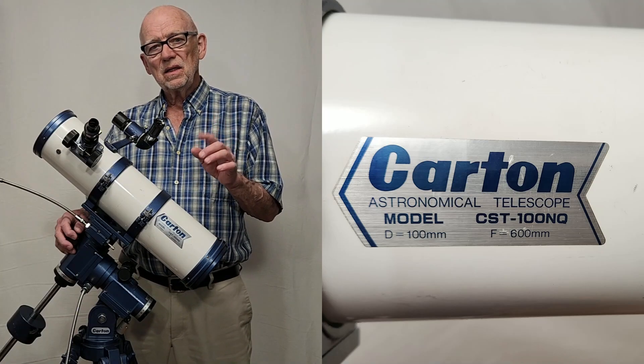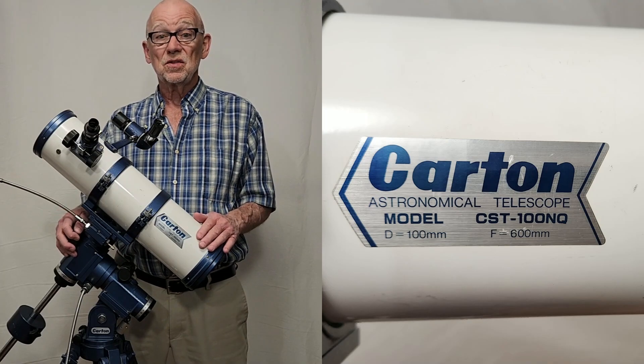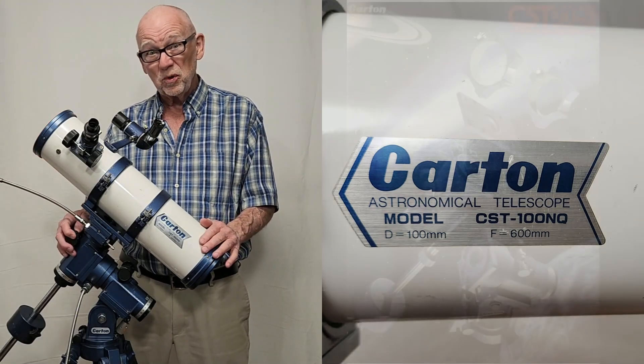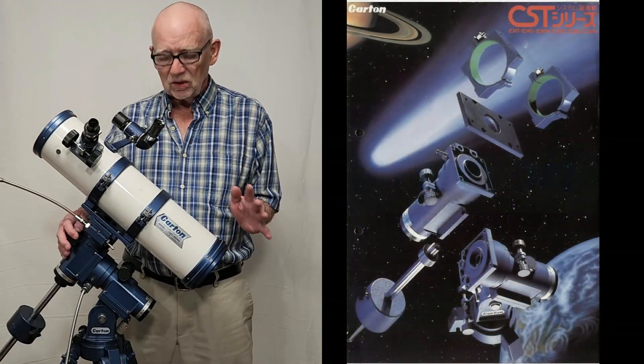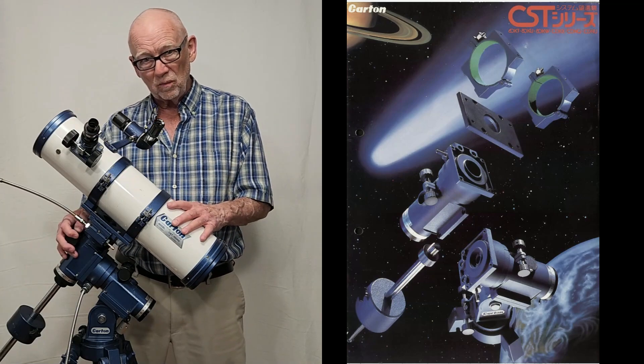The N in the name stands for Newtonian and the Q I'm sure stands for cuteness because look at this thing. Is this the cutest little 4-inch telescope you've ever seen? My goodness, I love the color.